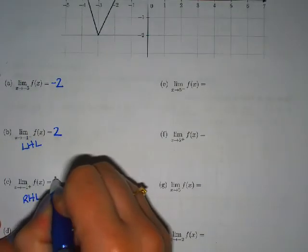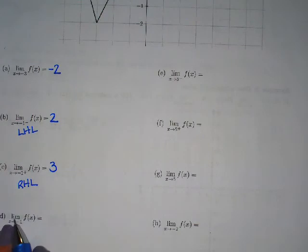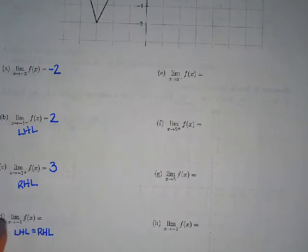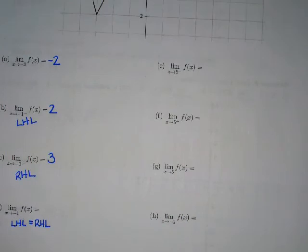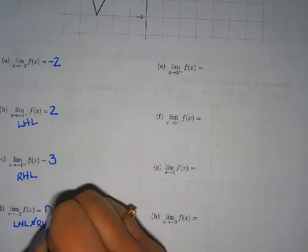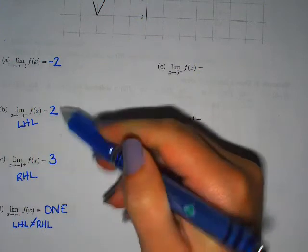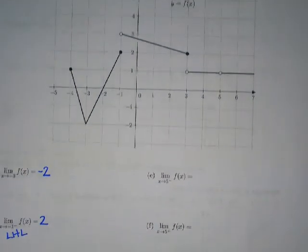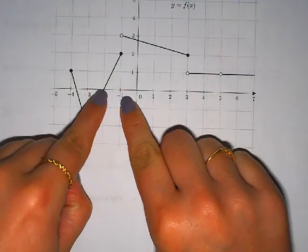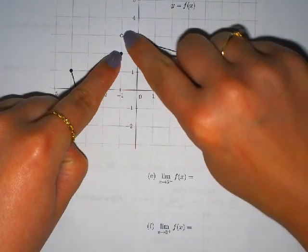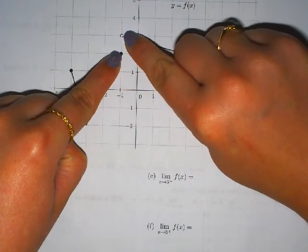The next problem asks for the limit as x approaches negative 1 from both sides. For this two-sided limit to exist, the left-hand limit must equal the right-hand limit. The left-hand limit was 2 and the right-hand limit was 3 — they are not equal, so the answer is DNE. We can verify by looking at the graph: approaching negative 1 from the left gives 2, from the right gives 3. My fingers do not meet, so the answer is DNE.